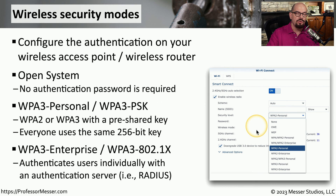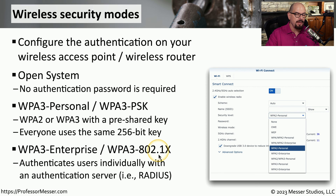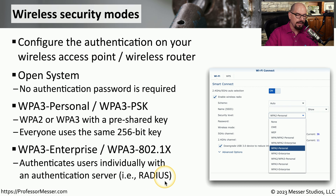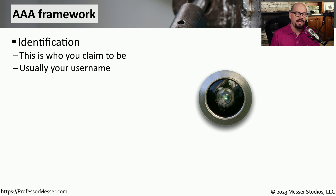For corporate use, you'll probably see the option of WPA3 Enterprise, which might also be abbreviated as WPA3 802.1x. This means the wireless access point will prompt for a username and password, and the authentication is usually linked back to a centralized authentication server running RADIUS, LDAP, or TACACS. That centralized authentication server is often referred to as a AAA server.